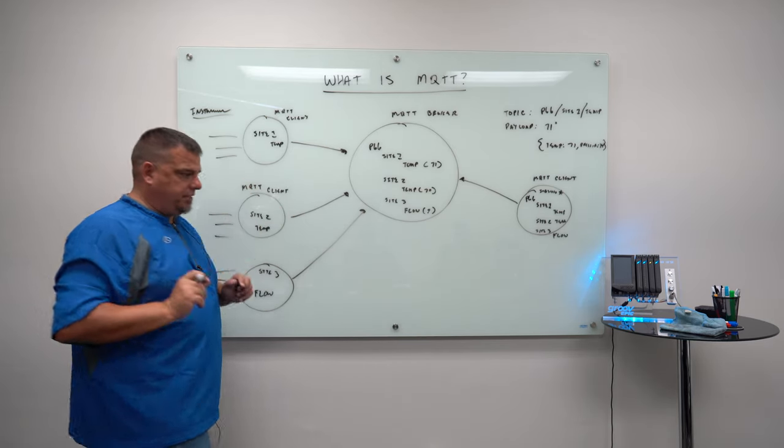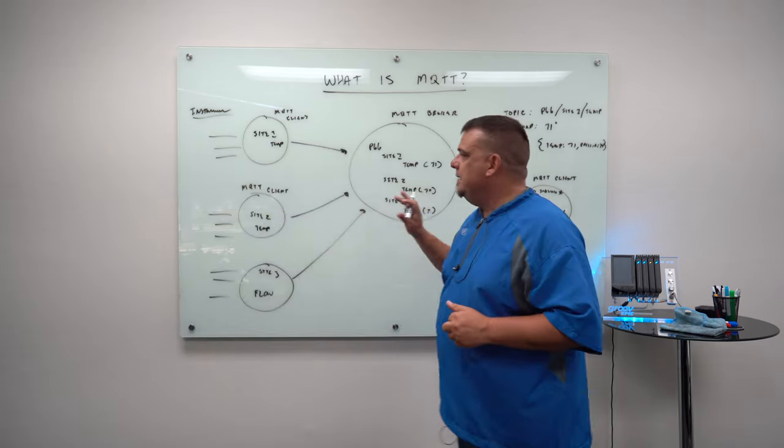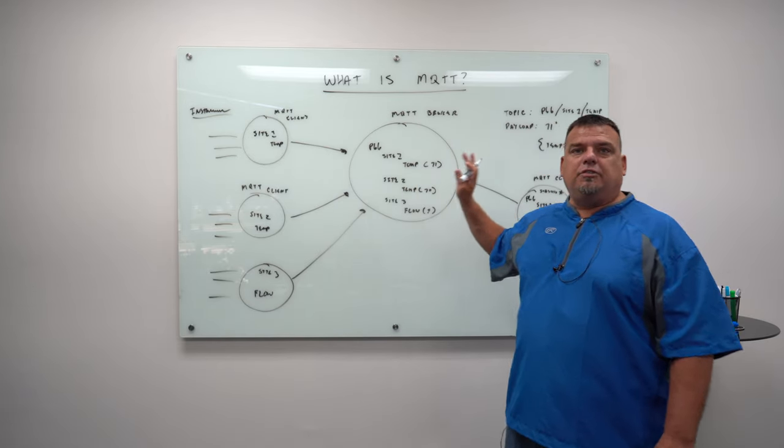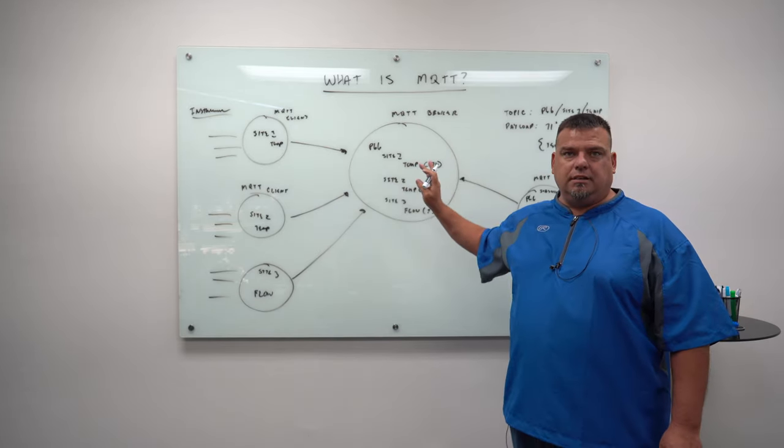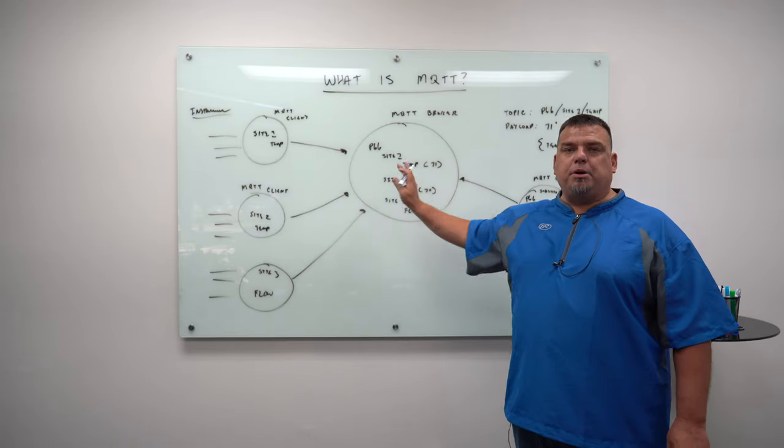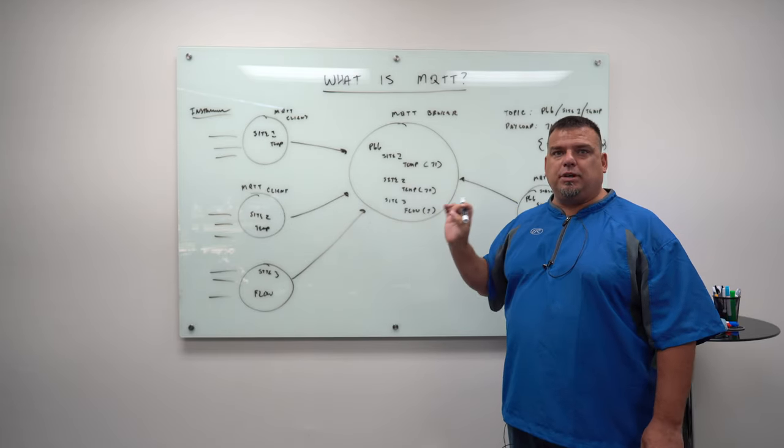A couple of important things. This is a 10,000 foot view of what is possible with MQTT. And it is the bare bones. This is MQTT 3.1.1.